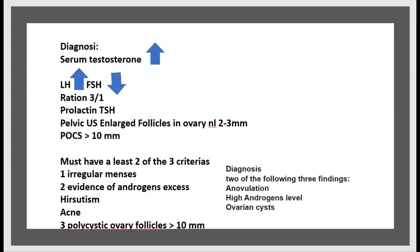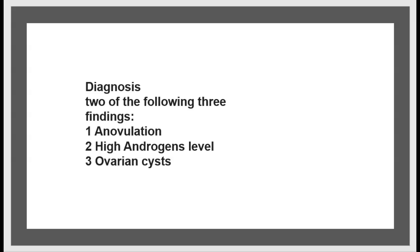Diagnosis requires at least two of three criteria: first, irregular menses; second, evidence of androgen excess such as hirsutism or acne; and third, polycystic ovarian follicles over 10 millimeters. These three findings are: anovulation, high androgen levels, and ovarian cysts.